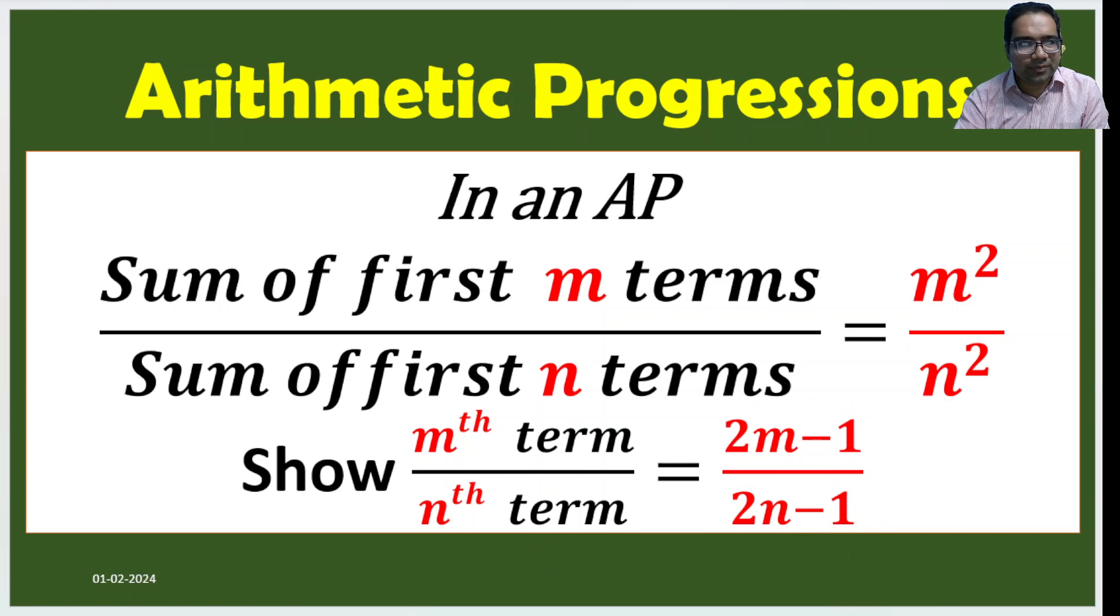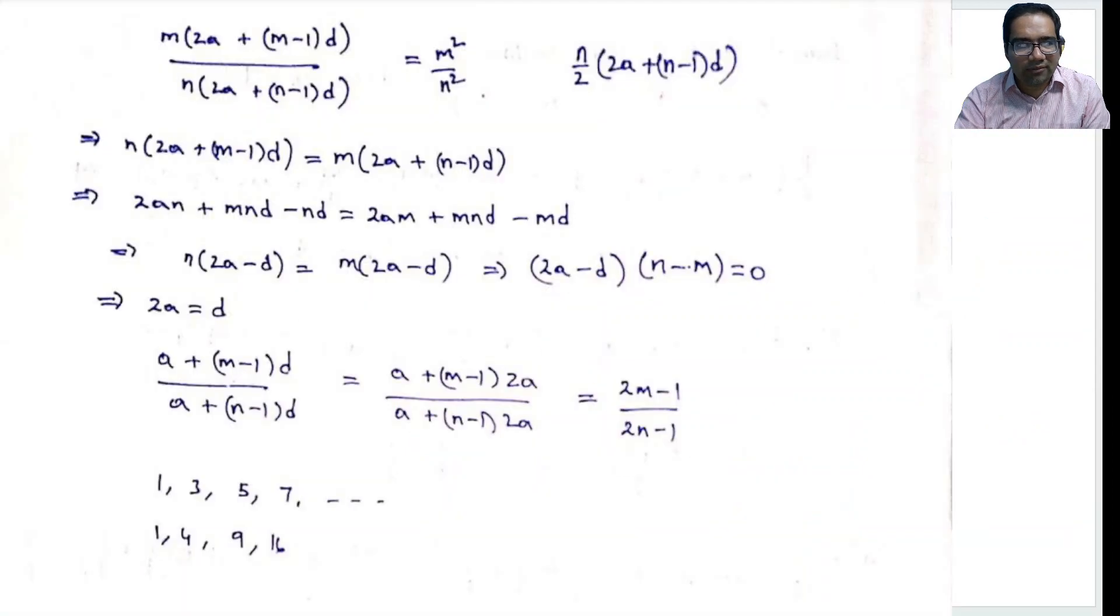Let us see how. In an arithmetic progression, m² by n², sum of m terms and n terms. When we look at this, it should immediately occur to us that this series is something like odd numbers. We know odd numbers: 1, 3, 5, 7. The sum of the series is first one is 1, second is 1 plus 3 is 4, 1 plus 3 plus 5 is 9, 1 plus 3 plus 5 plus 7 is 16. Sum of odd numbers, this series runs in squares.